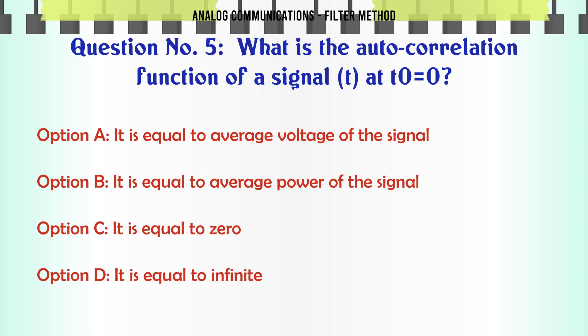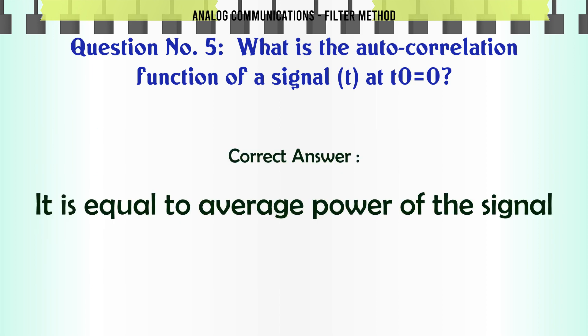What is the autocorrelation function of a signal R(τ) at τ=0? a) It is equal to the average voltage of the signal. b) It is equal to the average power of the signal. c) It is equal to zero. d) It is equal to infinite. The correct answer is: It is equal to the average power of the signal.